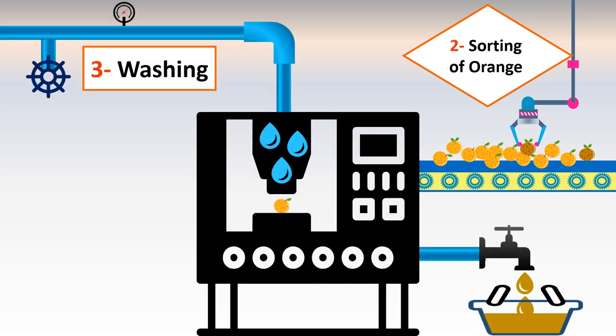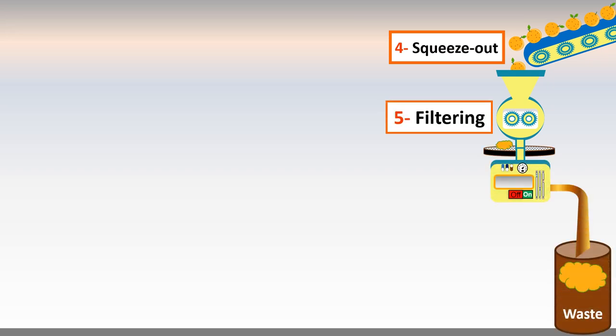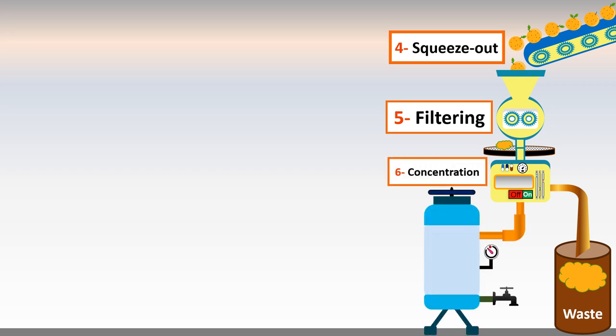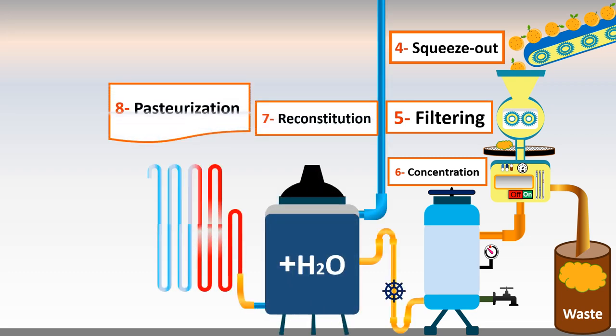Step 3 is washing the good orange fruits, followed by draining the wastewater. Step 4, the orange fruits are squeezed. Step 5 is filtering to remove any peel or seeds. Step 6 is concentration, because it is a natural juice. Step 7 is reconstitution by adding water.